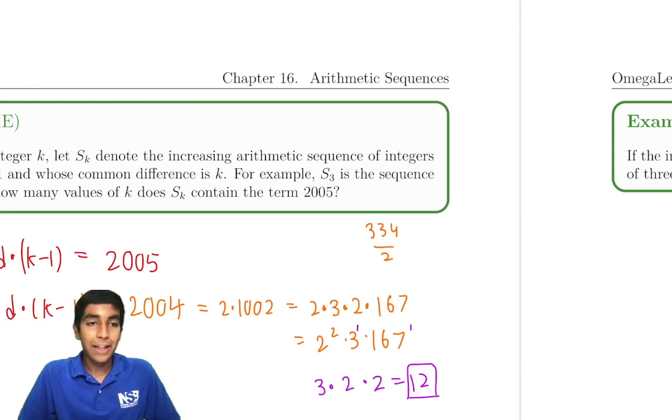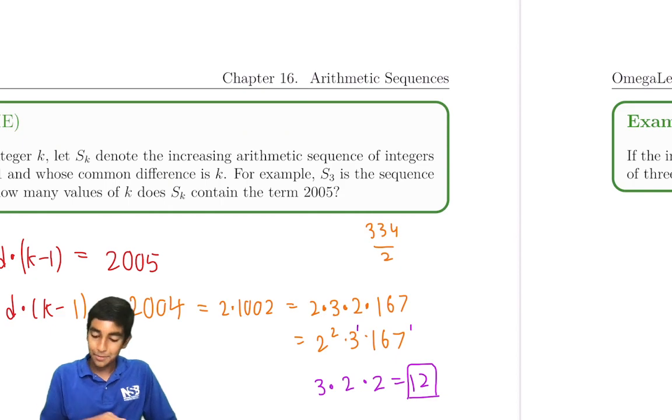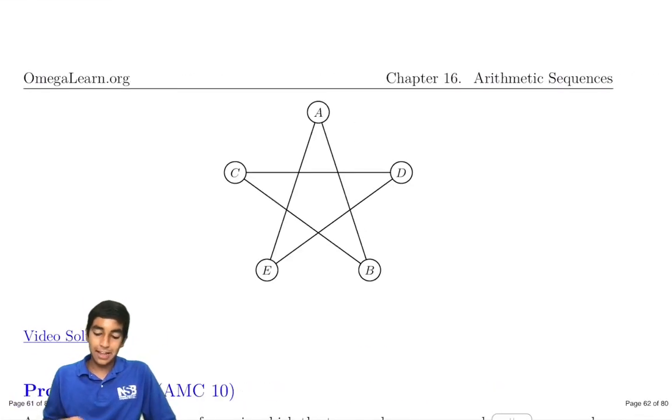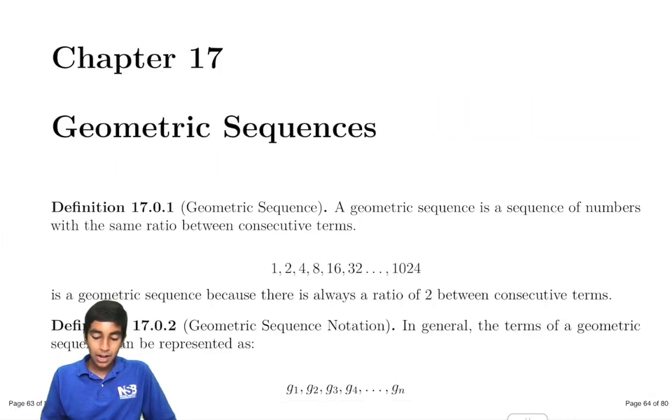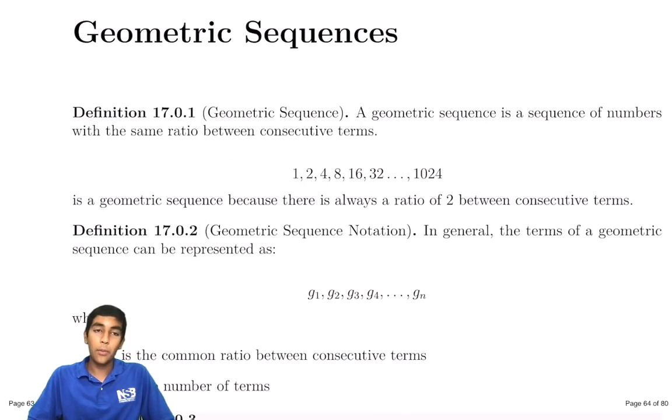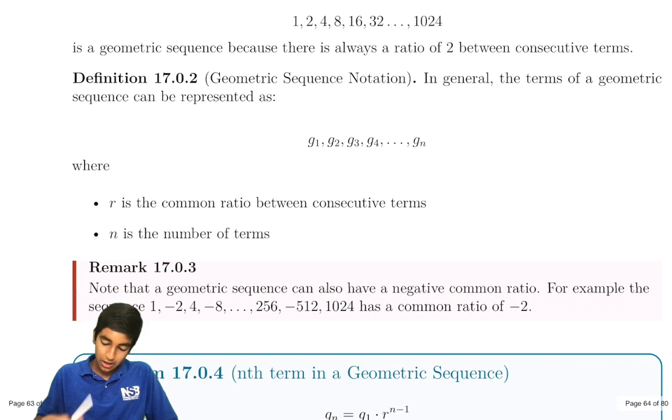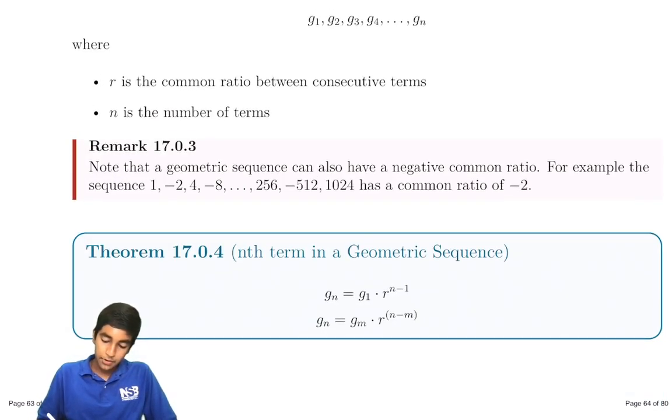In the last chapter of Mastering AMC 10.12, we covered arithmetic sequences. Today we're covering geometric sequences, where there's a common ratio instead of a common difference. A geometric sequence has a common ratio, so the nth term is the first term times r to the n minus 1. In terms of the mth term, it's r times r to the n minus m.